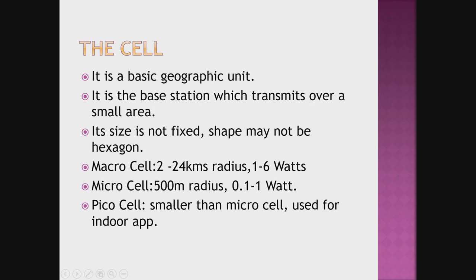Let us study different parameters of the cell. The cell is a basic geographic unit; it is a base station which transmits over a smaller area. Its size is not fixed, and its shape may not be a perfect hexagon but is approximately hexagonal. Cells can be categorized as macro cell, micro cell, or pico cell depending on their size. Macro cell ranges from 2 to 24 kilometer radius with output power ranging from 1 to 6 watts. Micro cell has a 500 meter radius with power ranging from 0.1 to 1 watt. Pico cells are smaller than micro cells and are used for indoor applications.